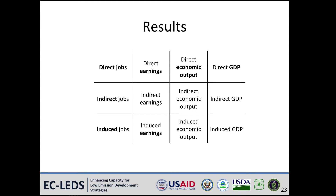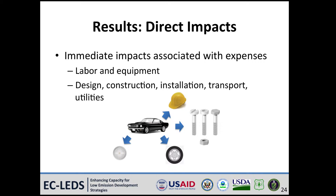Combining the four types and three categories of results gives us a matrix of 12 cells. Let's talk about direct, indirect, and induced impacts. Direct impacts refer to immediate impacts associated with expenses from the project being analyzed — examples include labor, equipment, design, construction, installation, and utility expenses. In the car manufacturer example, direct impacts would include salaries to workers and money spent to purchase components like headlights, tires, and screws.